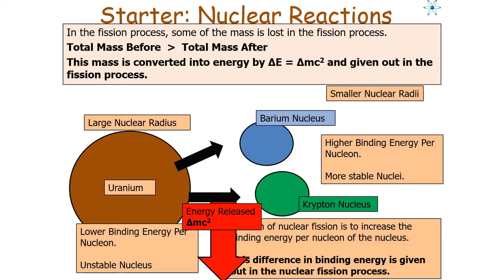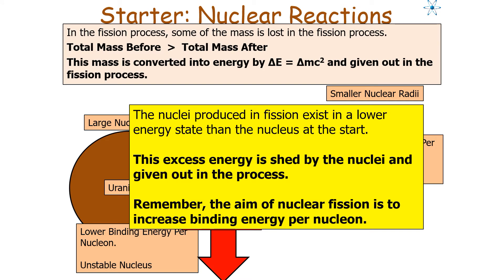In the fission process, some mass is lost — the total mass before is greater than the total mass after. This mass is converted into energy by delta E equals delta mc squared and given out in the fission process. The energy is released either as kinetic energy of the particles or as gamma photons. The nuclei produced in fission exist in a lower energy state, so this excess energy is shed by the nucleus and given out in the process.